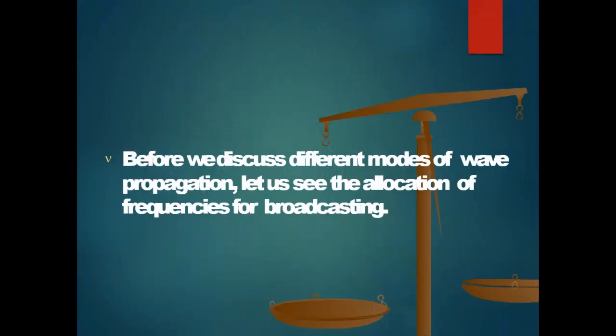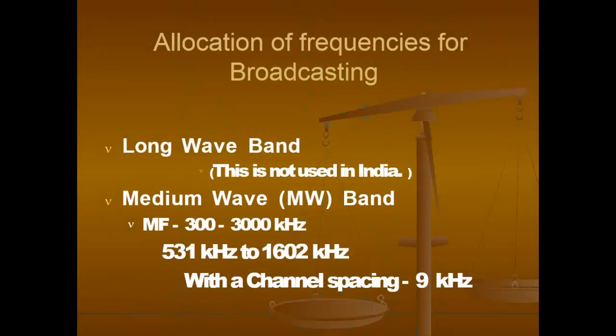Before we discuss different modes of wave propagation, let us see the allocation of frequencies for broadcasting. Depending on the frequencies, the wave propagation is split into different categories. Allocation of frequencies for broadcasting: Long wave band — this is not used in India. Medium wave band — the frequency is 300 to 3000 kHz, specifically 531 kHz to 1602 kHz, with a channel spacing of 9 kHz.